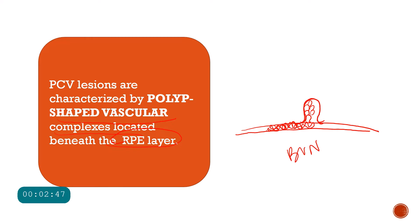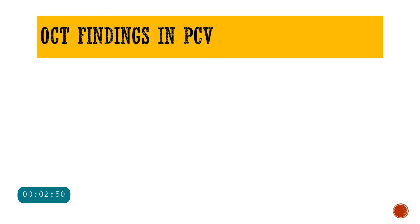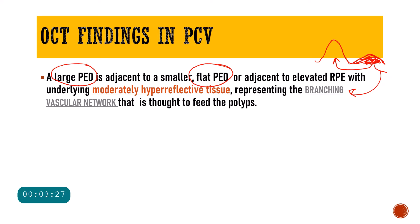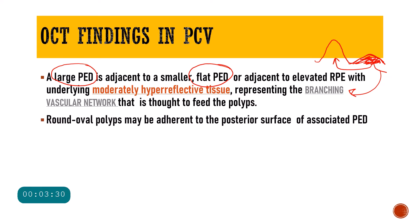On OCT, PCV will typically present with a large pigment epithelial detachment. Adjacent to that large PED, there will be a smaller or flatter PED which will usually contain hyper-reflective material — that tissue is the branching vascular network. This smaller PED housing the branching vascular network is considered to be supplying the polyps present in that tall PED. Sometimes on the posterior surface of this PED you will see certain round oval polyps.